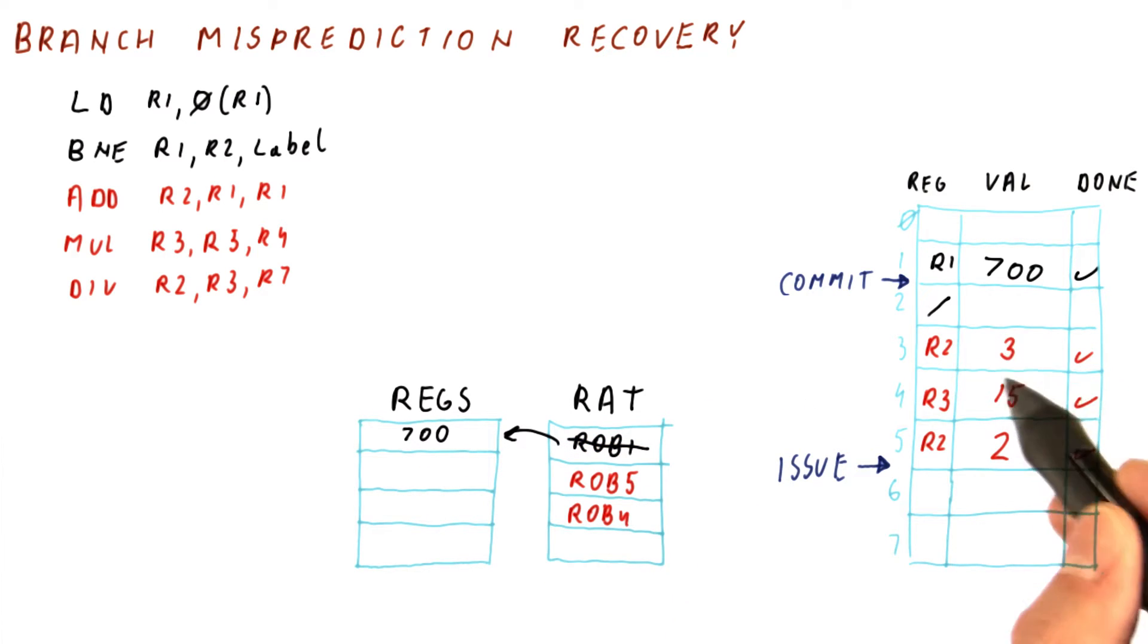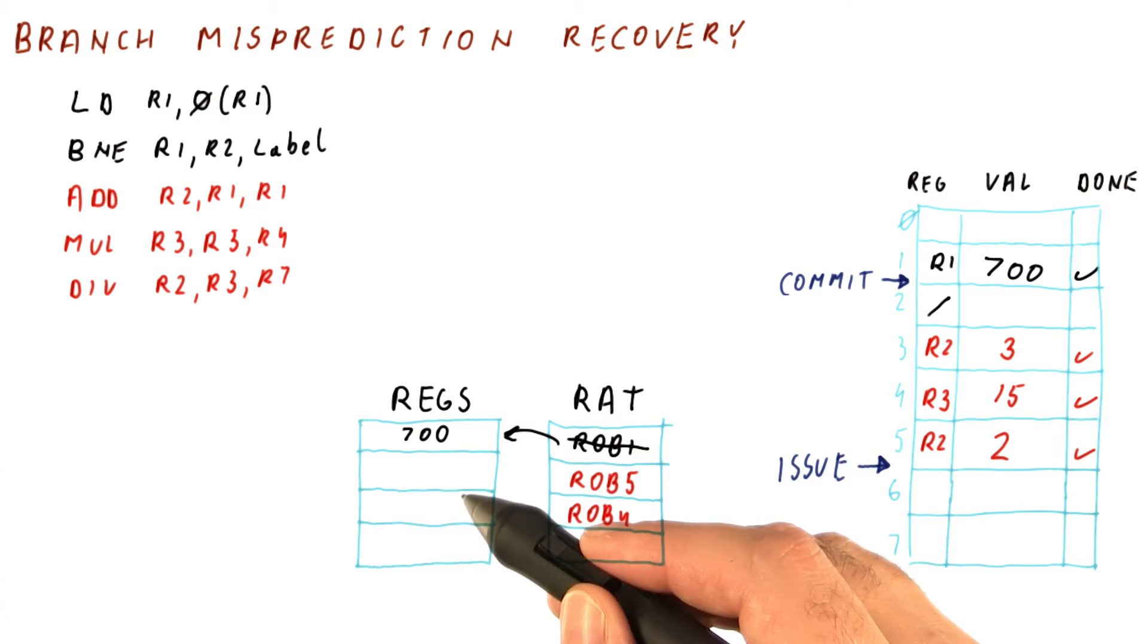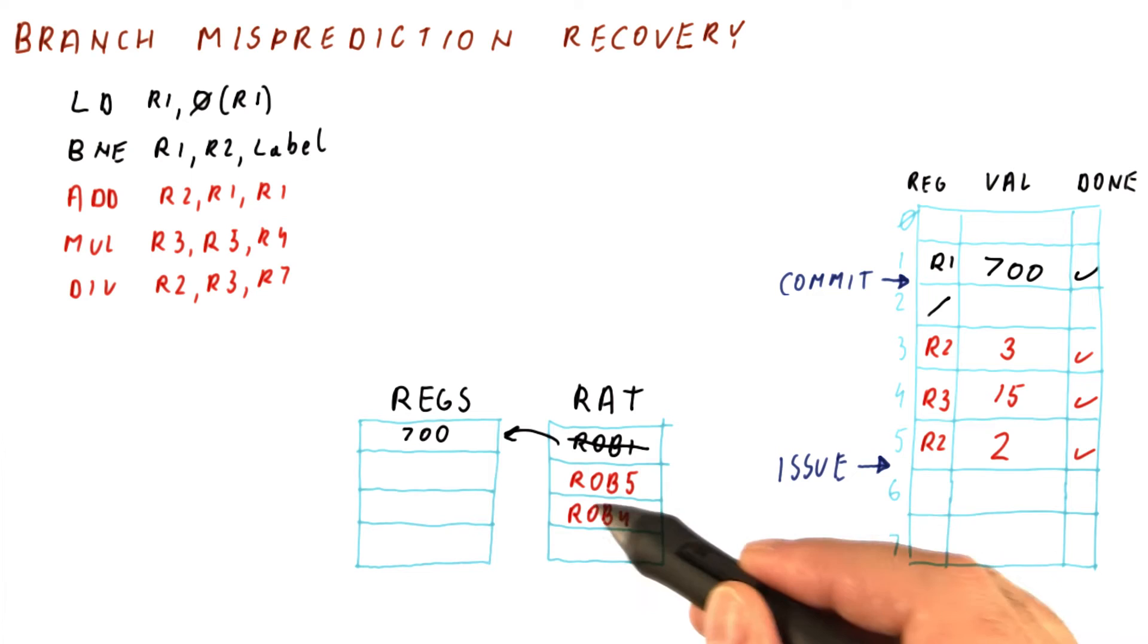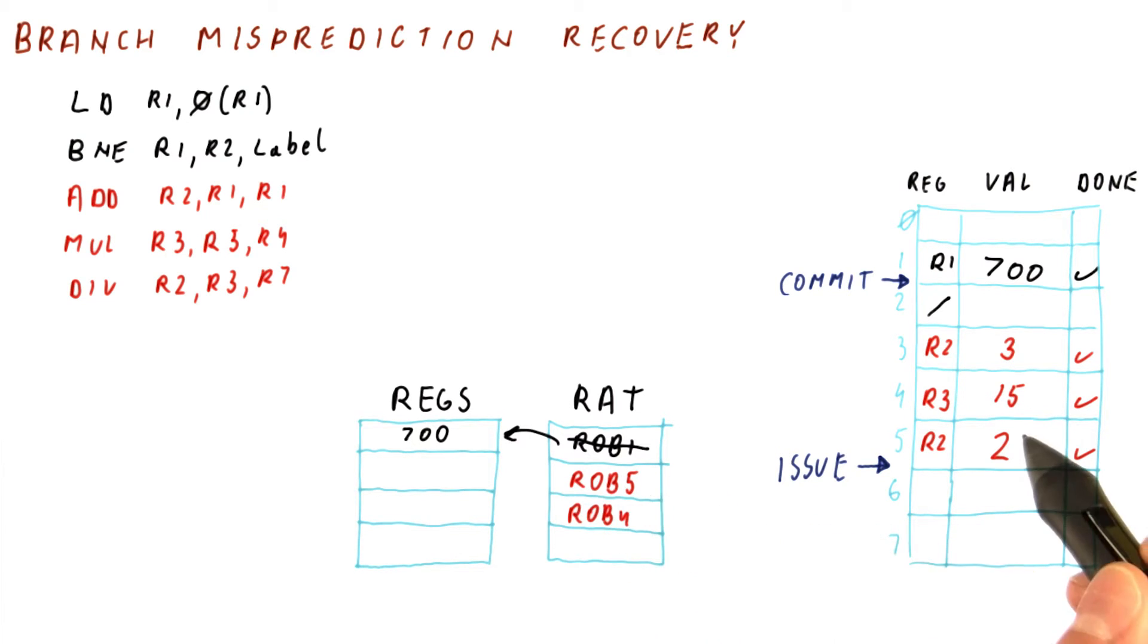Now, note that this result of 3 would not have been written to the registers, even with Tomasulo's algorithm, because the renaming for R2 is pointing not to this instruction.